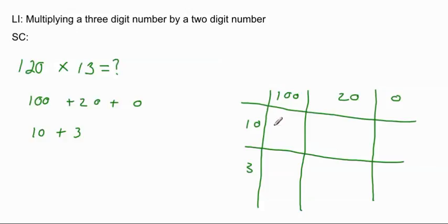So, 10 times 100 would be 1,000. 10 times 20 is going to be 200. And 10 times 0 is 0, so we don't have to worry about that too much.